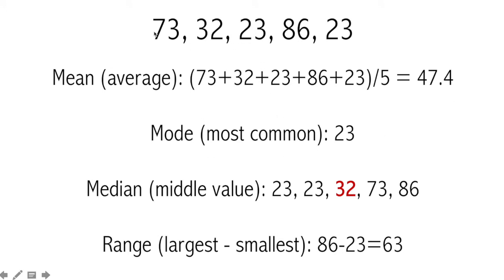Mode is the most common number. 73 happens once, 32 happens once, 86 happens once, but 23 appears twice — so 23 is the mode. The median is the middle value. To find it, we arrange the numbers in ascending order and then start cancelling one number from the left, one from the right, until we are left with only 1. In this case that's 32.